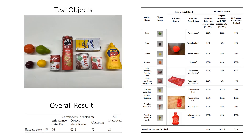Finally, we show a summary of the experimental results. We tested on a set of 10 YCB grocery objects with a success rate of 96% for affordance detection, 62.5% for object identification, and 72% for grasping, with these components tested each in isolation. Together, the system achieved a 48% success rate for grasping novel objects in cluttered scenes.